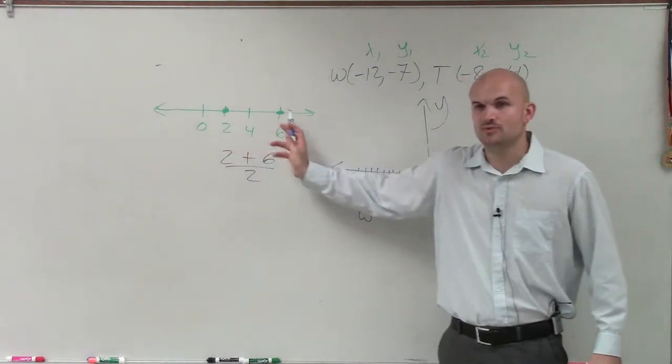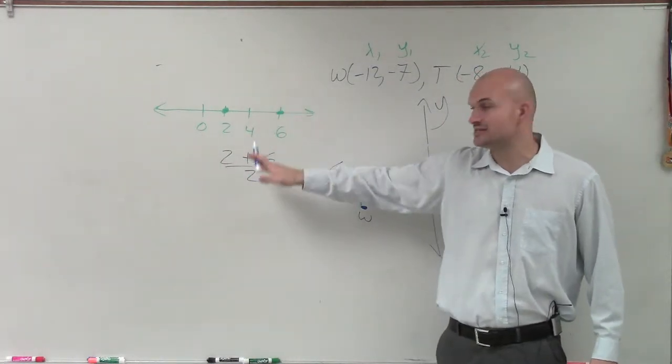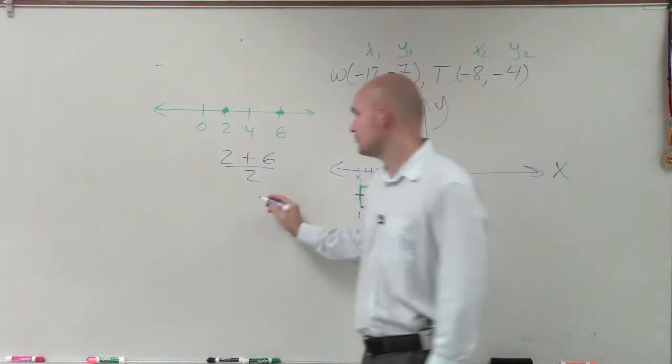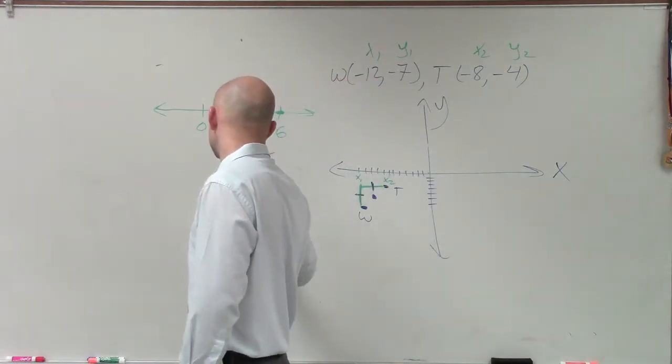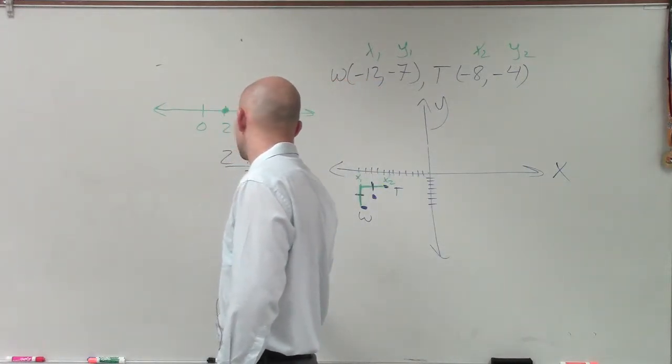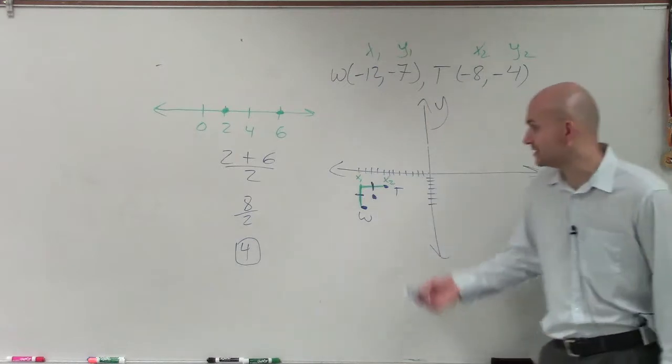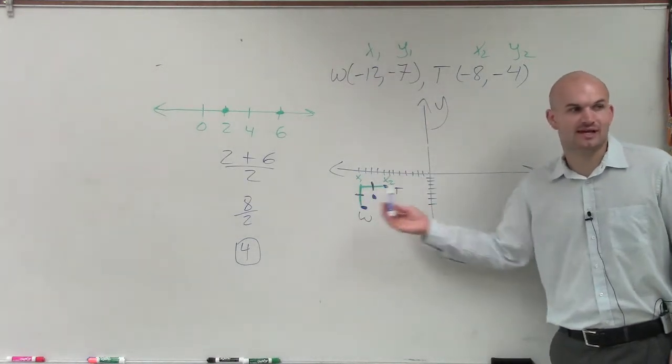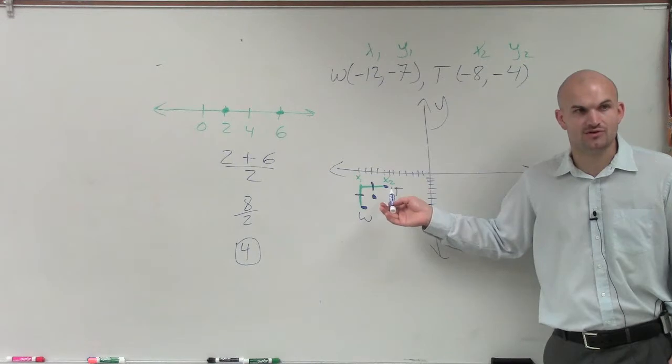So what I can do is say 2 plus 6 divided by 2. So Jake, what you do is take your two points, add them up, and then divide it by 2, and therefore you'll get 8 divided by 2, which equals 4. That's your midpoint. Can I apply that same thing horizontally here between my x1 and my x2?